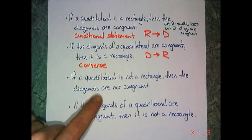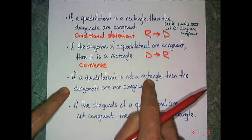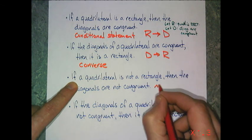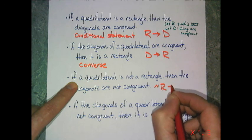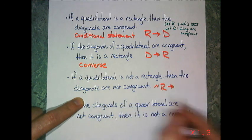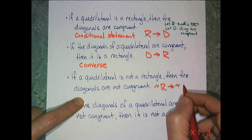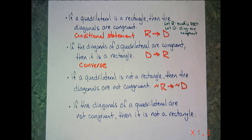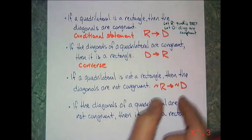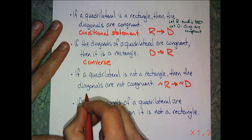And that's the converse of my conditional statement. The next one, if a quadrilateral is not a rectangle, so not a rectangle, then the diagonals are not congruent. So that's the same order as my conditional statement, but now I put a negation in both of them. That is called the inverse.